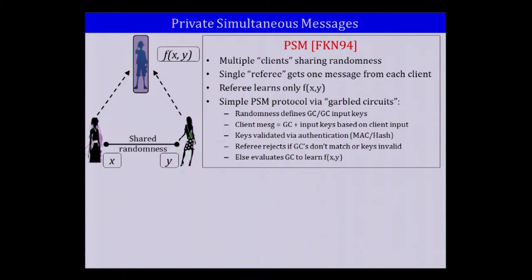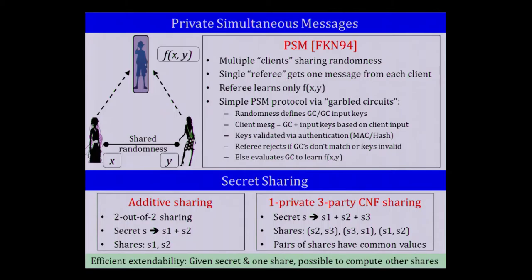Our other main tool is basic secret sharing — specifically additive secret sharing and one-private three-party CNF secret sharing. In CNF sharing, the secret is split into three parts and each share consists of two out of three parts, so each share is one-private, and pairs of shares have common values. A key property is efficient extendability: given the secret and just one share, you can compute all of the shares. This is true for all linear secret sharing schemes, including both additive and CNF secret sharing.